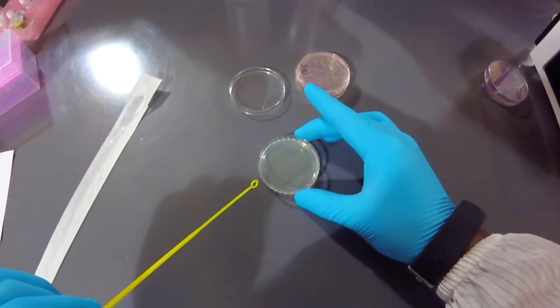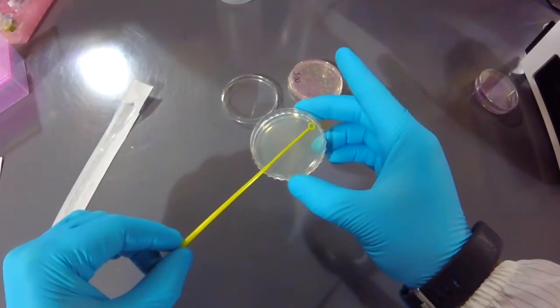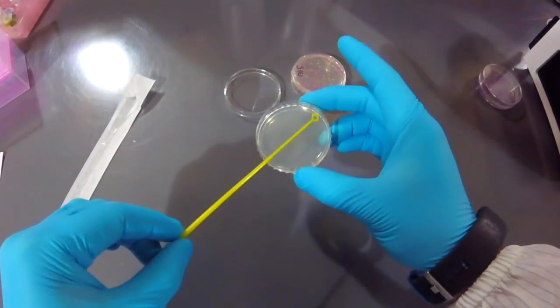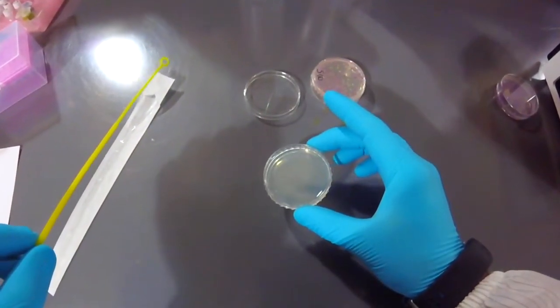And then, now I'm going to use the other side, which hasn't touched anything, and I'm just going to make sure the tip and the other side don't touch. So again, this is clean, and I'm going to very gently zigzag across.